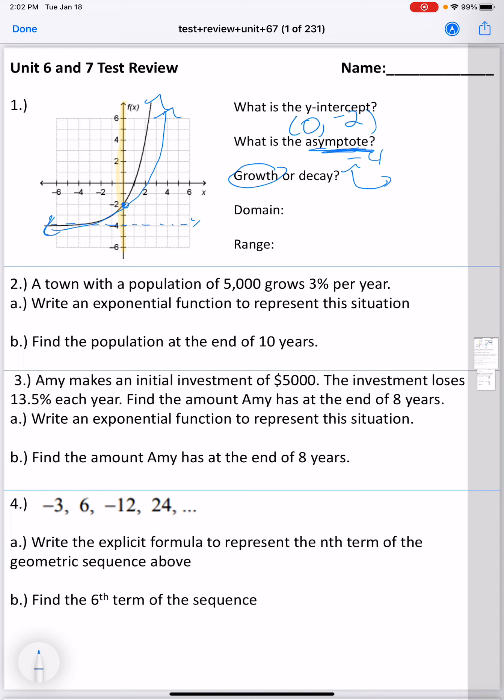The domain is all of the x values, and if you see here, there's arrows going in both directions, so that would be all real numbers. And then the range, on the other hand, is I have this arrow that's going up forever and ever, but just like we talked about earlier, it's leveling off right above negative 4. So our range is actually all of the y values that are greater than negative 4.